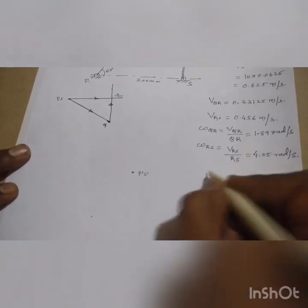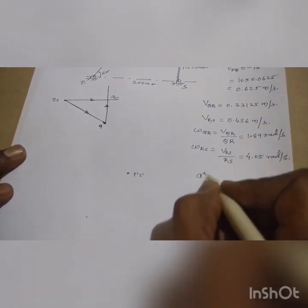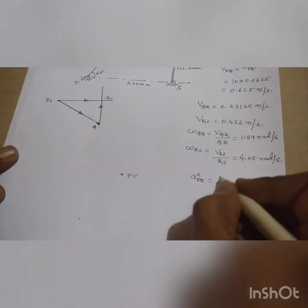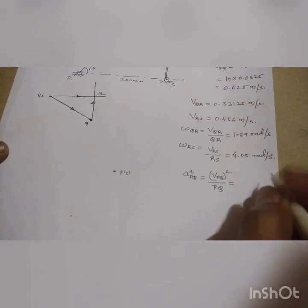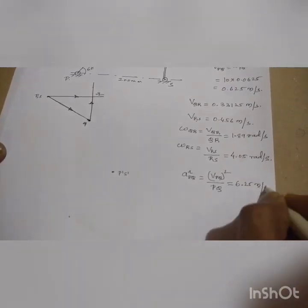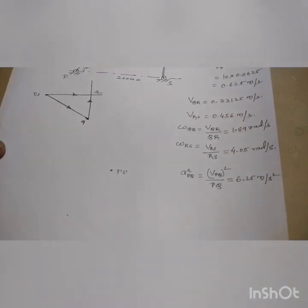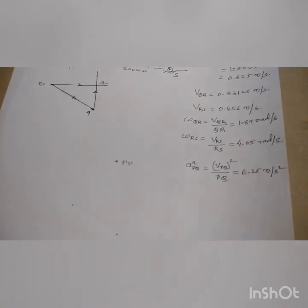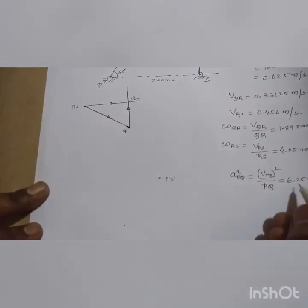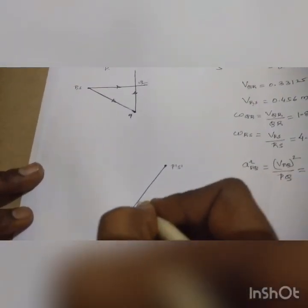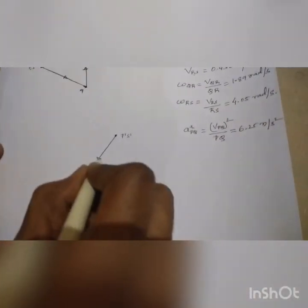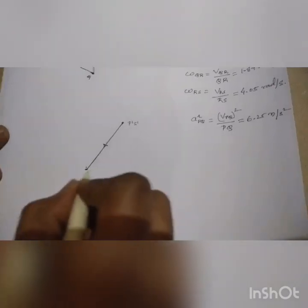The radial acceleration of PQ is: AR_PQ = VPQ² / PQ = (0.625)² / 0.0625 = 6.25 m/s². Since this is a radial component, it acts along PQ towards the center. From P' as the initial point, in the direction along PQ towards the center, I draw a vector of magnitude 6.25 m/s² and mark this as point q'.